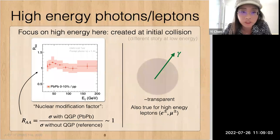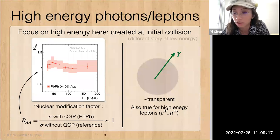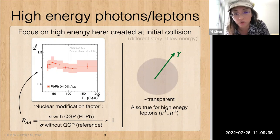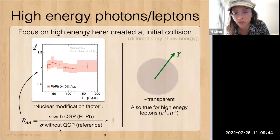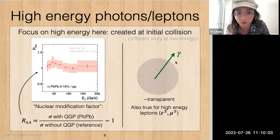The first example is high-energy photons and leptons. At high energy, they are mostly created at the initial collision — at low energy it's a different story with thermal photons and other effects. Here is an example of the nuclear modification factor RAA, plotted as a function of photon transverse energy. RAA is defined as the cross section with quark-gluon plasma divided by cross section without it. We can see that RAA is compatible with one, meaning there is little to no suppression for high-energy photons — the QGP is transparent to them. The same is also true for high-energy muons and electrons.